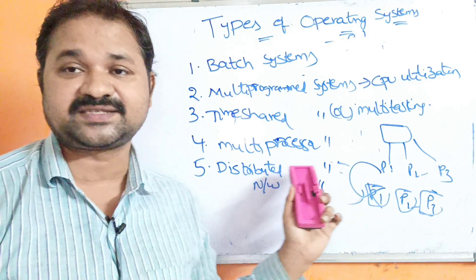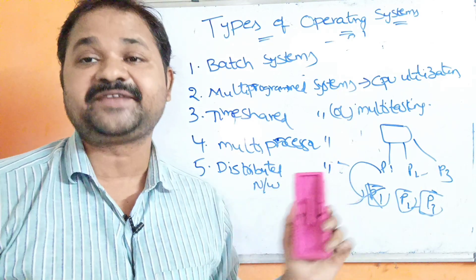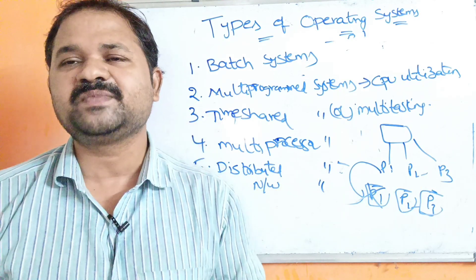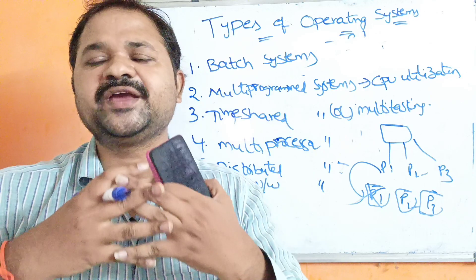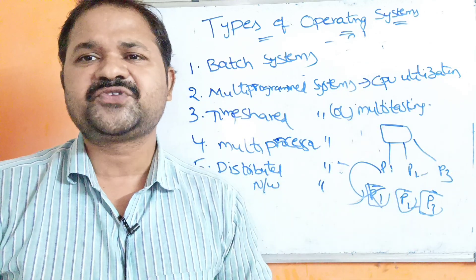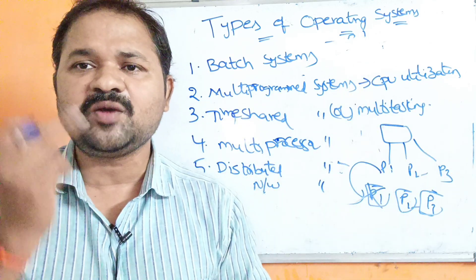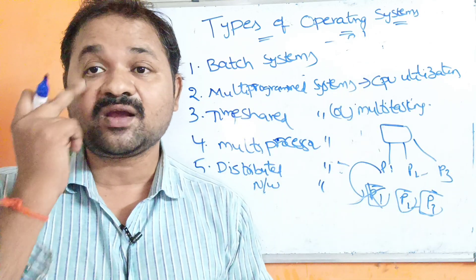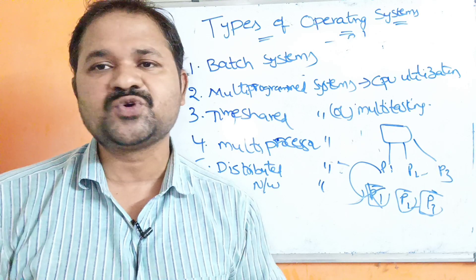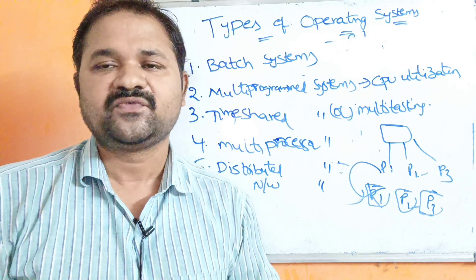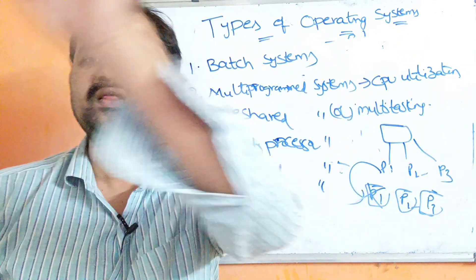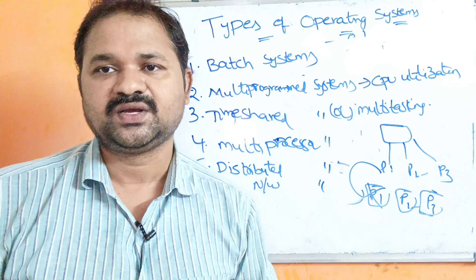If some problem occurs and the first and second computers fail, there is no problem because those copies are already available in the remaining computers. The same data is replicated across all the systems in the network, so this is about the distributed or network system.